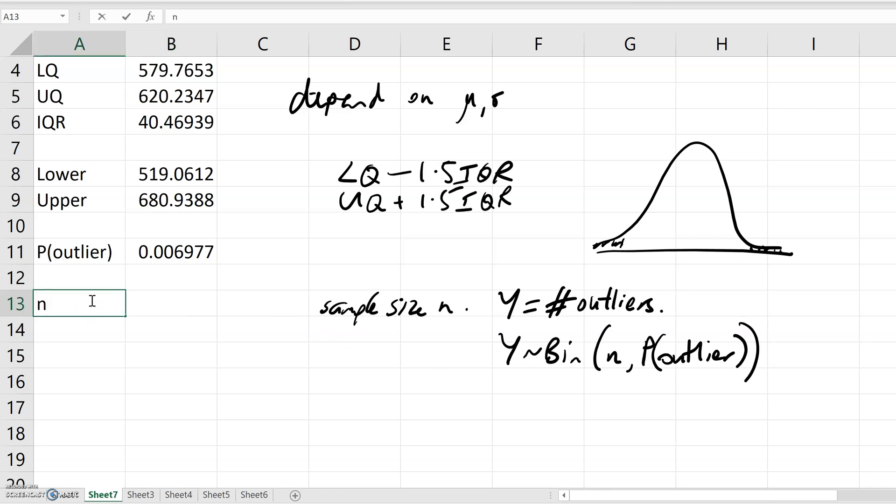So here I'm going to have n, my sample size, starting from 1. In the binomial, I want to know what is the probability that Y is greater than or equal to 1, which is 1 minus the probability that Y equals 0. What's the probability in a sample of size n that I have at least one outlier?